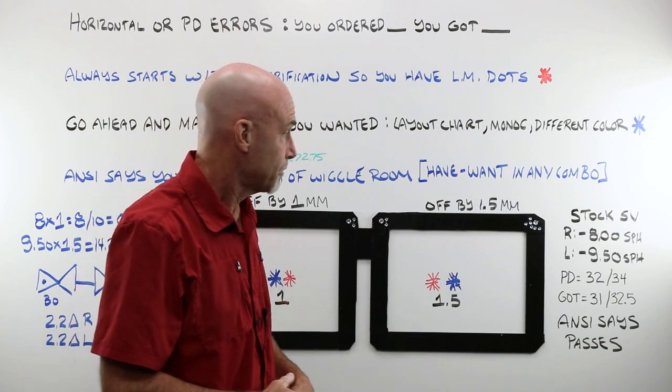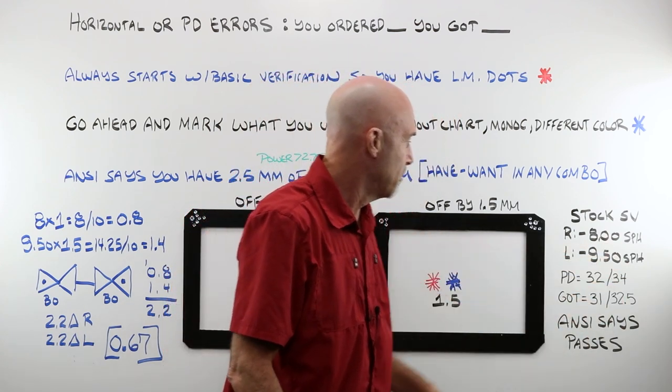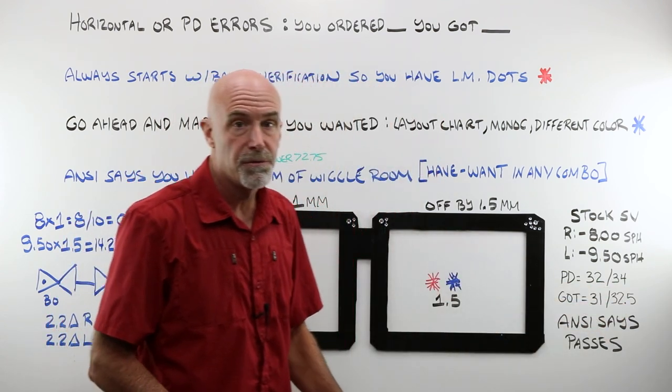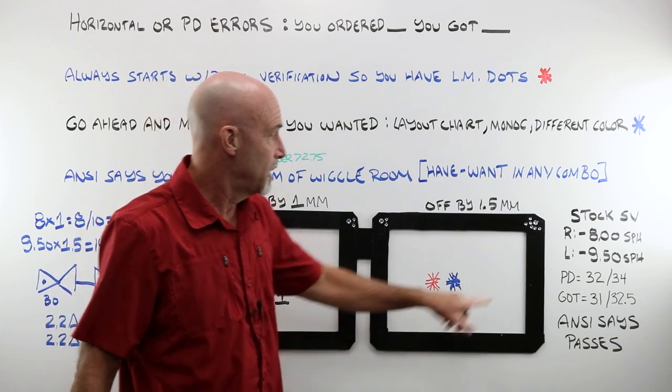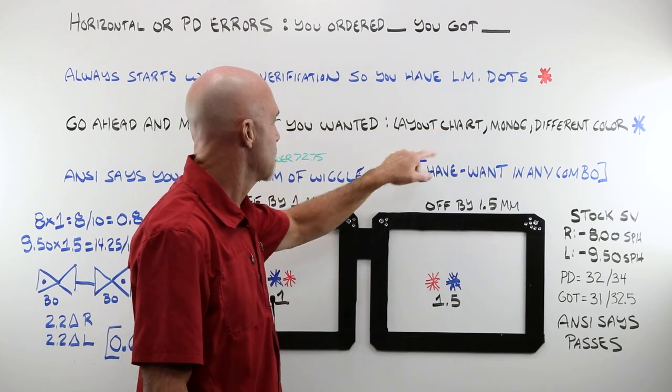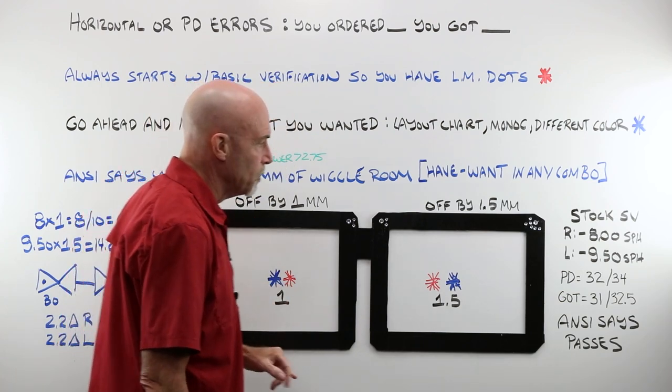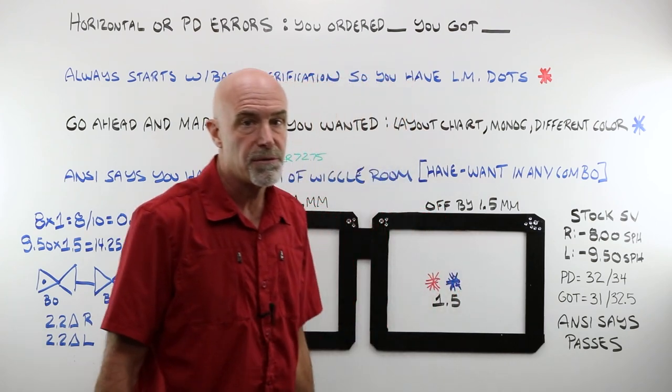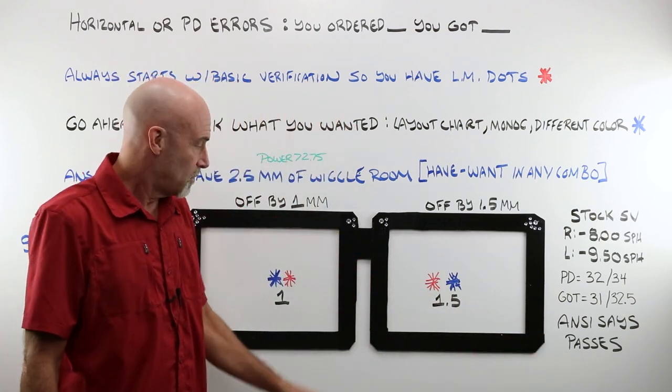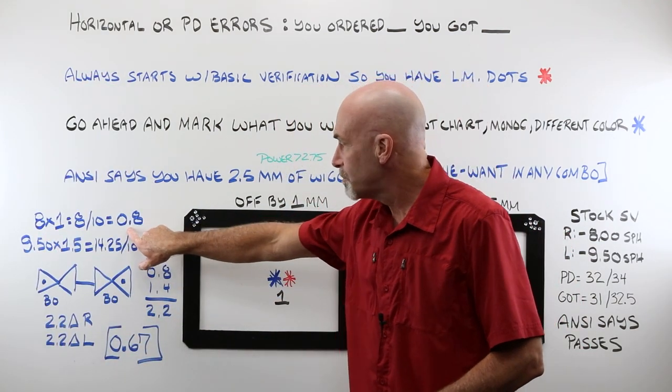Let's take a look at something. Stock single vision lenses. You have a right of a minus eight and a left of a minus 9.50. Your actual customer PD in reality is a 32-34. Called up the lab, called this job in. They pulled some stock lenses. Next morning you get the job back. You go through your verification. Something doesn't look right. You lay everything up. You've got your red tick mark and your blue, your red and your blue. And it turns out you've got a 31 and a 32.5. It's right there. ANSI says, you're good to go. Call up that customer. Tell them to come pick up their glasses.